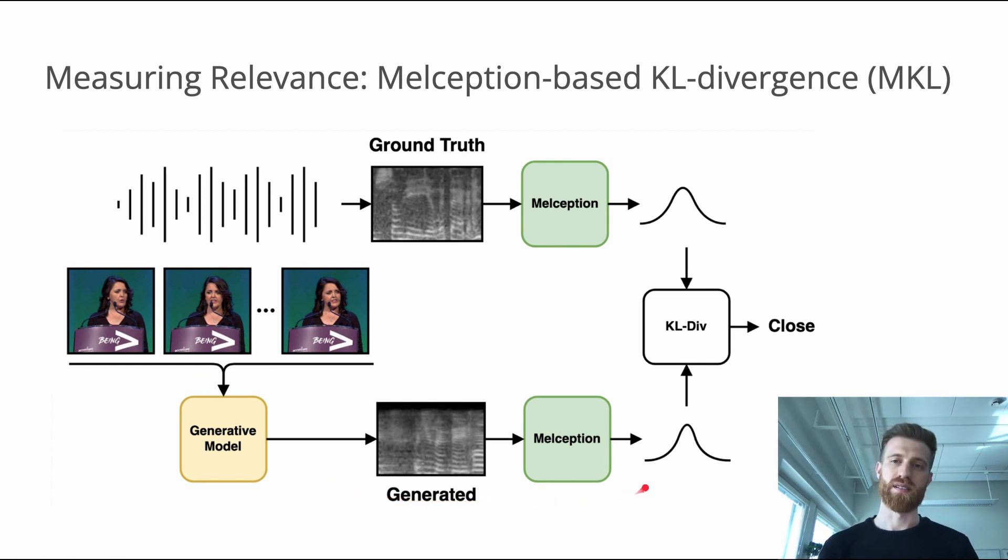Specifically, we compare distributions for the ground truth and the generated sound. These distributions are formed by a Softmax classifier pre-trained from scratch on VGG sound dataset beforehand. The distance between two distributions is measured by KL divergence.